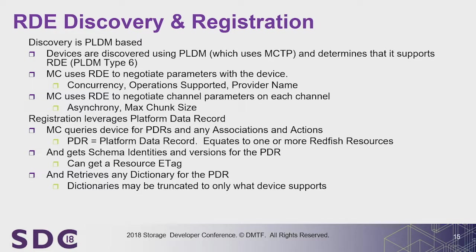For discovery: when you power on the machine, the management controller becomes the MCTP bus master — whether it's in the southbridge or on its own chip — and assigns endpoint IDs to every device it finds on I2C, PCIe, and future media. We have MCTP mappings to all those low-level media types, and Gen-Z has a work register with us already. Devices are discovered using MCTP, then PLDM is used for the next phase: negotiating parameters. The BMC identifies which PLDM types each device supports — monitoring and control, firmware update, and RDE — then proceeds to RDE discovery.